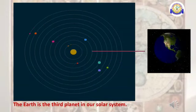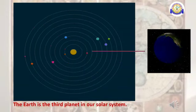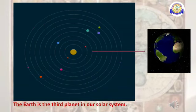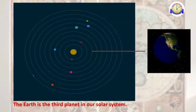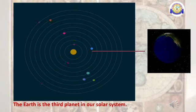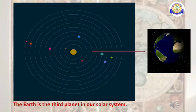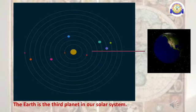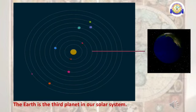Earth is a planet. A planet is a heavenly body that revolves around the sun. The Earth is the third planet in our solar system.